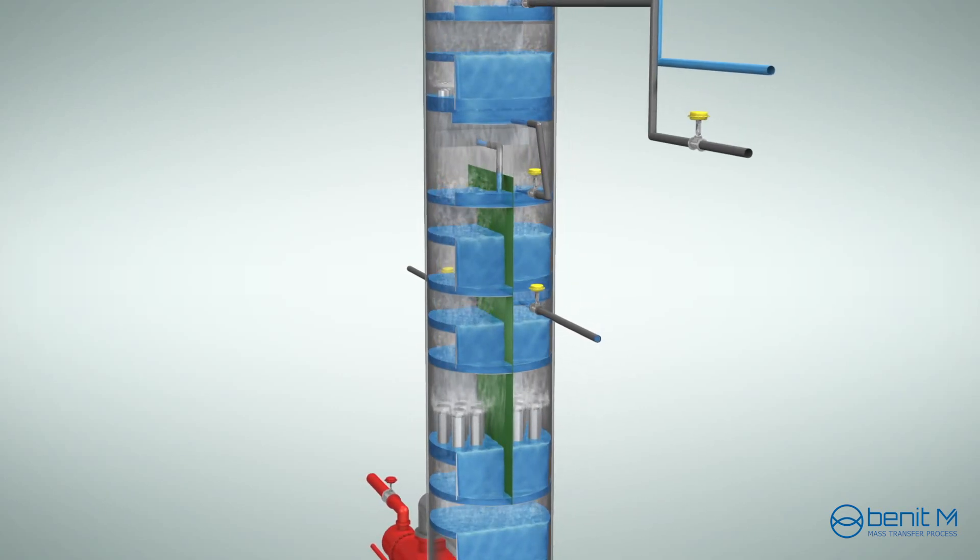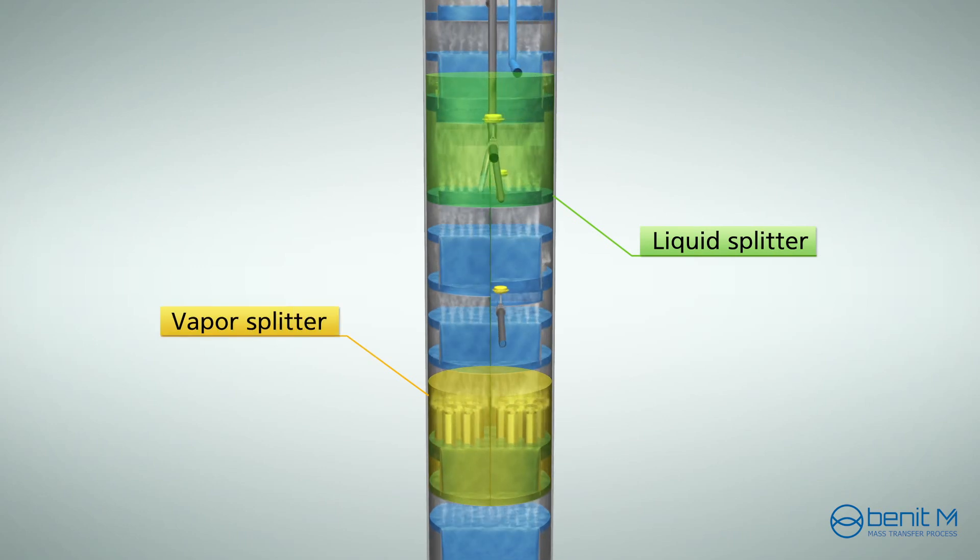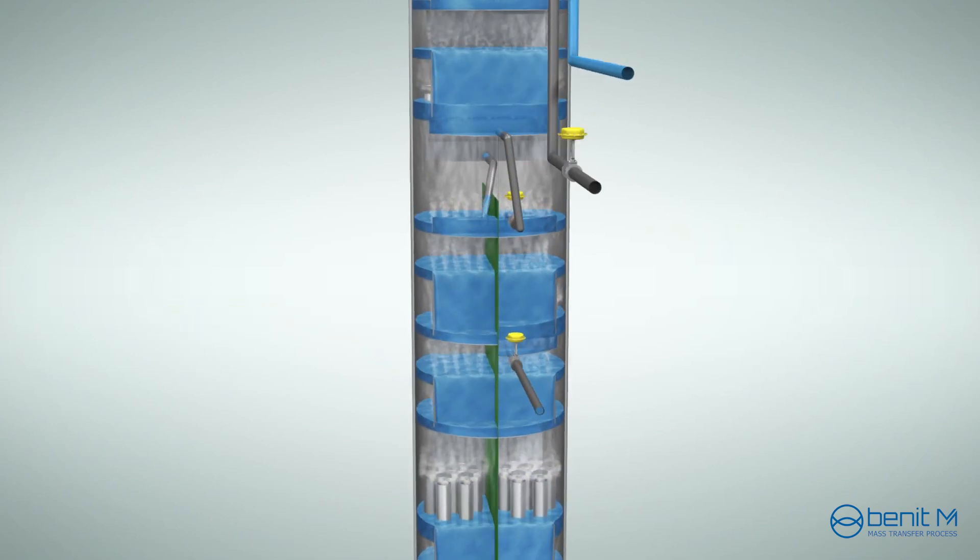Additionally, a dividing wall column needs a liquid splitter and a vapor splitter to distribute liquid and vapor properly to each section divided by the wall.